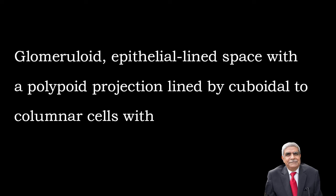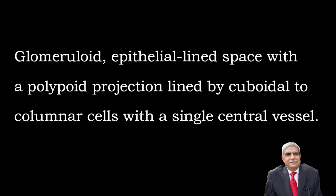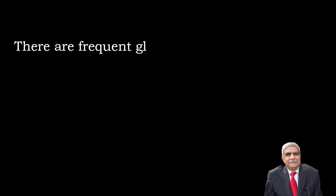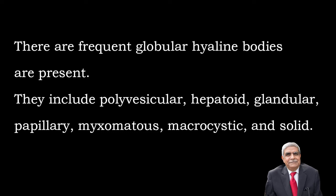Schiller-Duval bodies are characteristic. They are glomerulus-like epithelial-lined spaces with a polypoid projection, lined by cuboidal to columnar cells with a single central blood vessel. For your examination, you must know the structure of Schiller-Duval bodies. There are frequent hyaline bodies which are of alpha-1-antitrypsin or alpha-fetoprotein, present intracellularly or extracellularly.